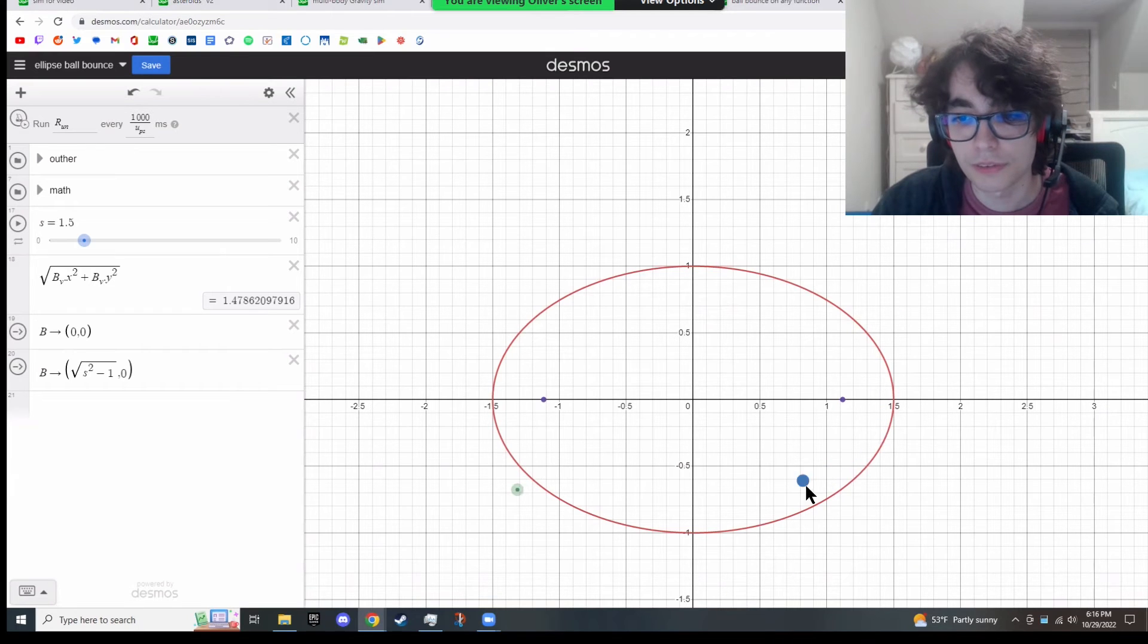And if the simulation was perfect, bouncing it directly on will always have it go through the foci. But it's not completely perfect, so there's a little inaccuracy.